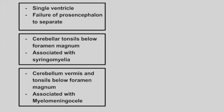Next is a patient that presents with a single ventricle — failure of the prosencephalon to separate. This is holoprosencephaly. It's seen alongside other midline defects and Patau syndrome.